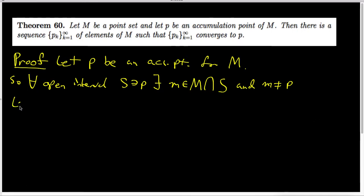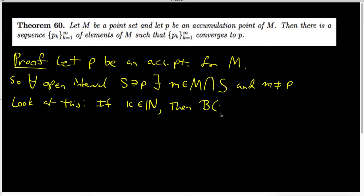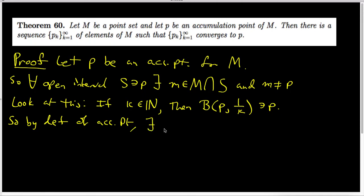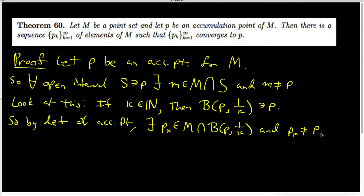That's true for every single particular open interval. If I pick any natural number k, then the delta ball centered at p of radius 1 over k is an open interval and it certainly contains p. So by the definition of accumulation point, there exists an element that I am going to call pk that belongs to M and also belongs to this delta ball centered at p of radius 1 over k. And I know that pk is not actually equal to the point p.